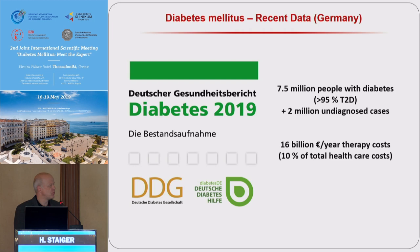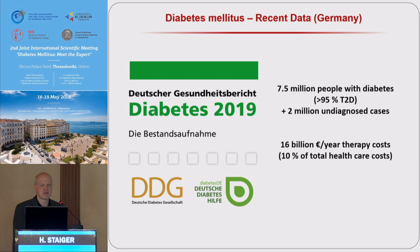According to this report, we have about 7.5 million people with diabetes in Germany currently. More than 95% suffer from type 2 diabetes. And there is an estimated number of about 2 million additional undiagnosed cases of diabetes. So this is about more than one-tenth of the population of Germany that is affected by diabetes. And they produce costs, for example for therapy, 16 billion euros per year, which corresponds to about 10% of the total healthcare costs.